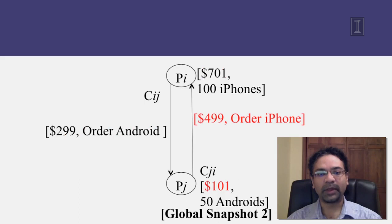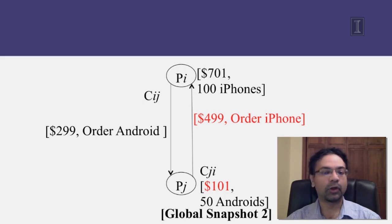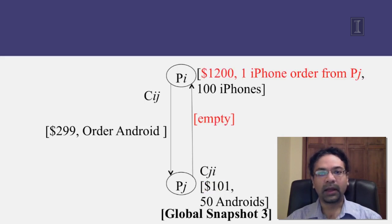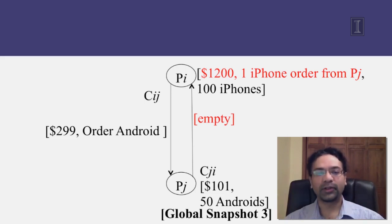Next, another event happens: PJ might send an order for an iPhone along with four hundred and ninety-nine dollars to PI. This results in PJ's balance going down to one hundred and one dollars and the state of channel CJI changing to have one message on it — this is global snapshot number two. Then the message from PJ is received at PI: channel CJI becomes empty, PI's balance goes up, it has an outstanding order of one iPhone, and this is global snapshot number three. In moving from one global snapshot to the next, an event happened somewhere in the system — these are causal events, and nowhere are we talking about physical time at all.